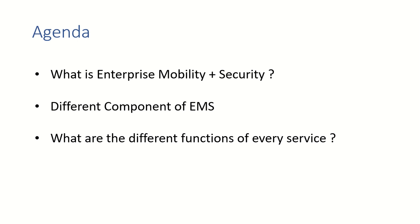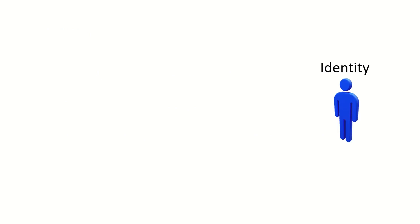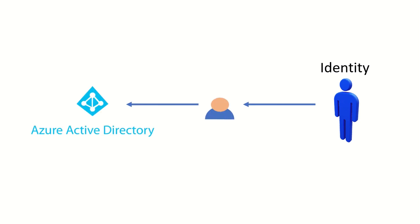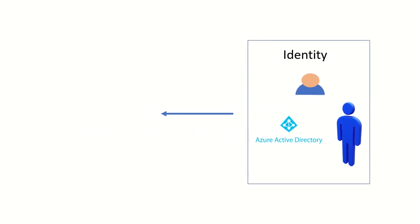Before we understand what exactly EMS is, let's consider a real-time scenario. Everything starts from identity — before a user can access any enterprise-protected resource, they need an identity. We'll be using Azure Active Directory to maintain all identities, either cloud-only identities or hybrid identities, wherein we are syncing user objects from on-prem to Azure Active Directory.